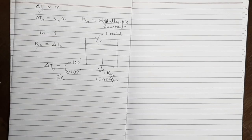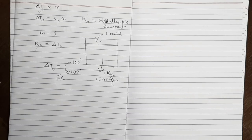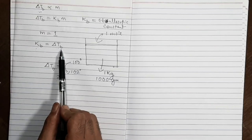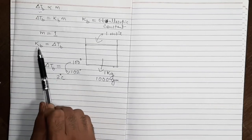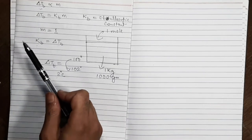So we took water, added a non-electrolyte, non-volatile impurity, and prepared a solution such that the molality remained one. Because of the addition of impurity, the boiling point of water rose by 2°C. That delta Tb — 2°C — is the ebuloscopic constant of water. Similarly, for benzene, you take benzene and mix it with a non-volatile, non-electrolyte impurity so that the molality of the benzene solution becomes one, and the rise in boiling point — say 2 or 3°C — is the ebuloscopic constant of benzene.